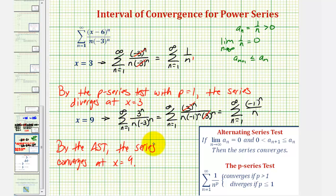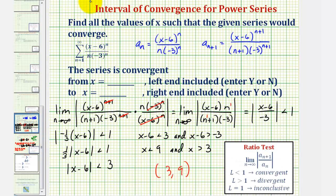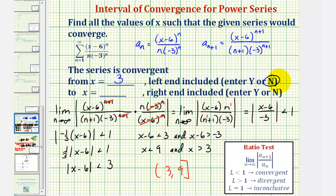The series was divergent at x equals three but convergent at x equals nine. Therefore, our interval of convergence is open on three but closed on nine. The series is convergent for x in the interval from three, not including the left endpoint, to nine, including the right endpoint.